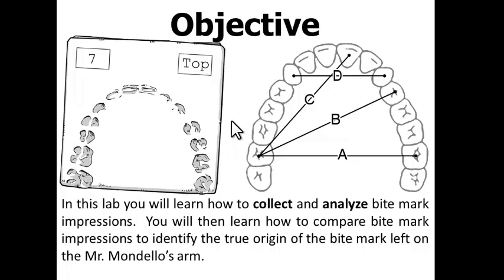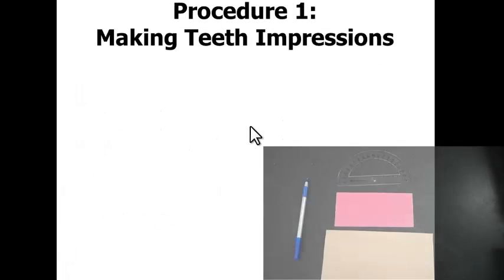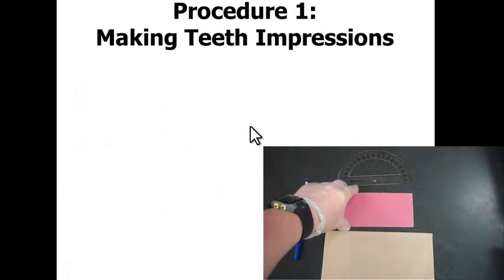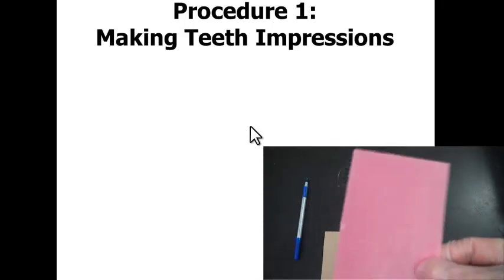In this lab, we will learn how to collect and analyze bite mark impressions, and then we will learn how to compare bite mark impressions to identify the true origin of the bite mark left on Mr. Mandela's arm. Procedure one is how to make a teeth impression.